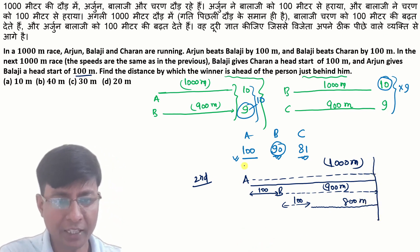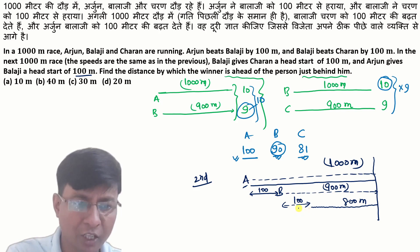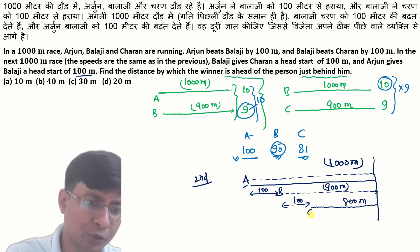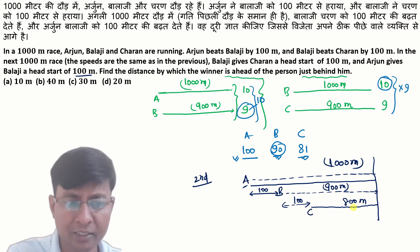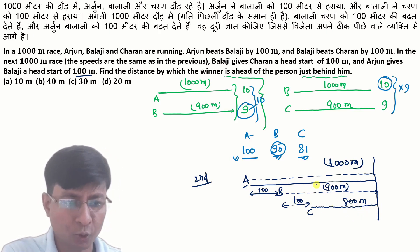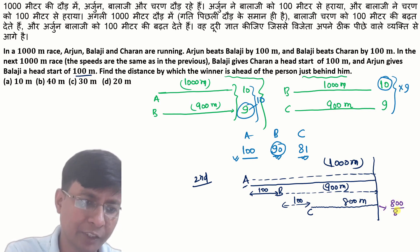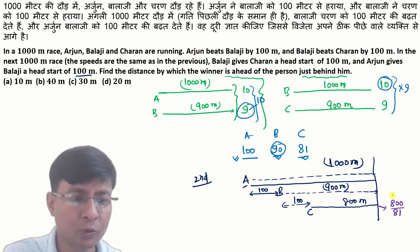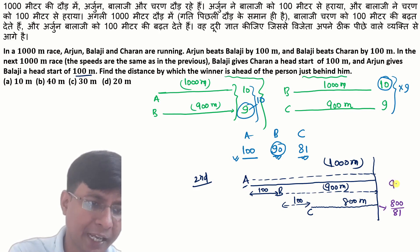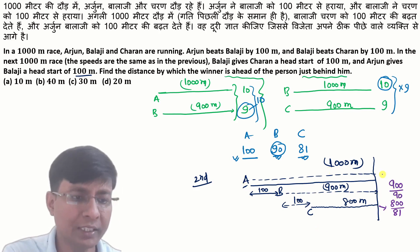So the distances to travel are: A travels 1000 meters, B travels 900 meters, and C travels 800 meters. Now, talking about time: C's time is 800 divided by 81, and B's time is 900 divided by 90.